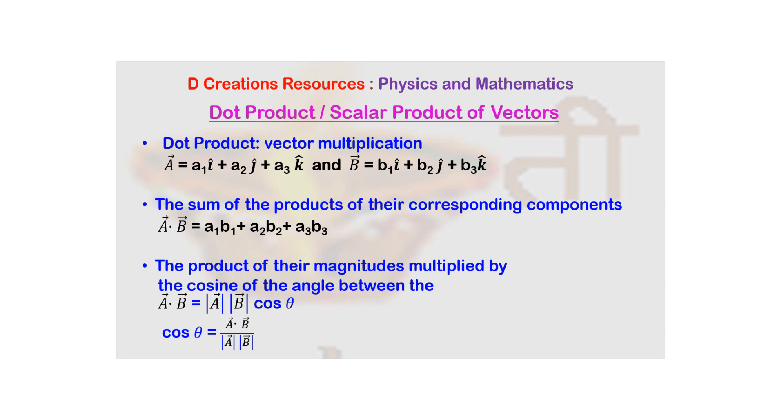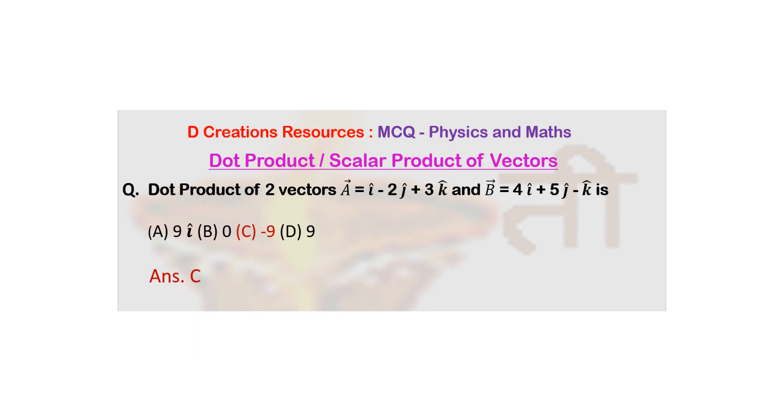Now maybe before looking at some more notations, let us just solve a quick question on this. So let us say there are these two vectors: A bar is i cap minus 2j cap plus 3k cap, and B bar is 4i cap plus 5j cap minus k cap.